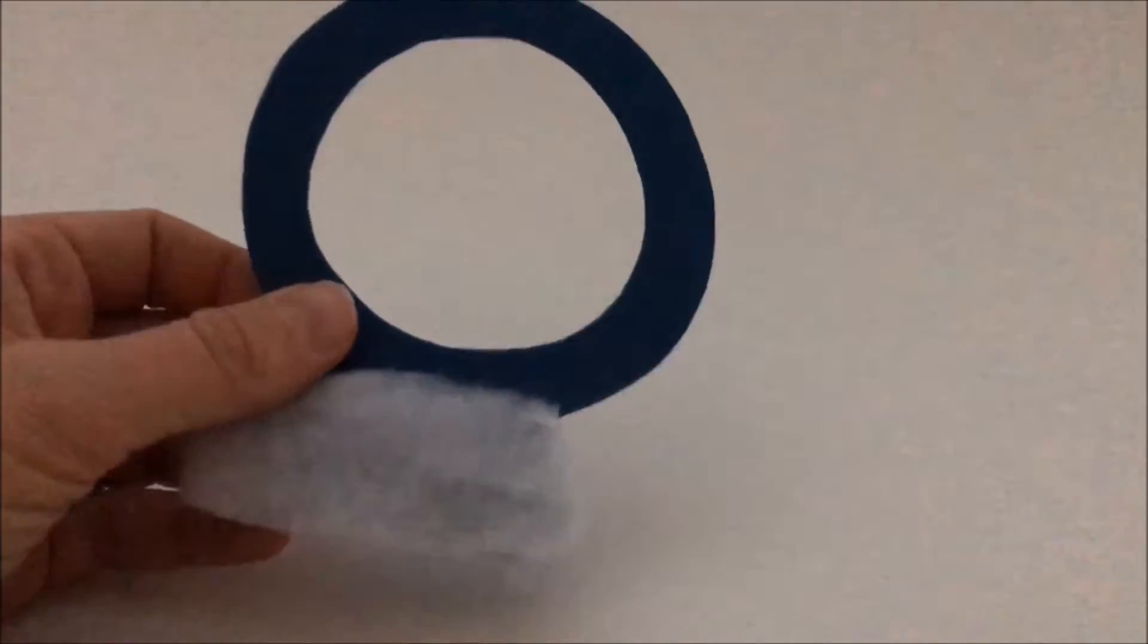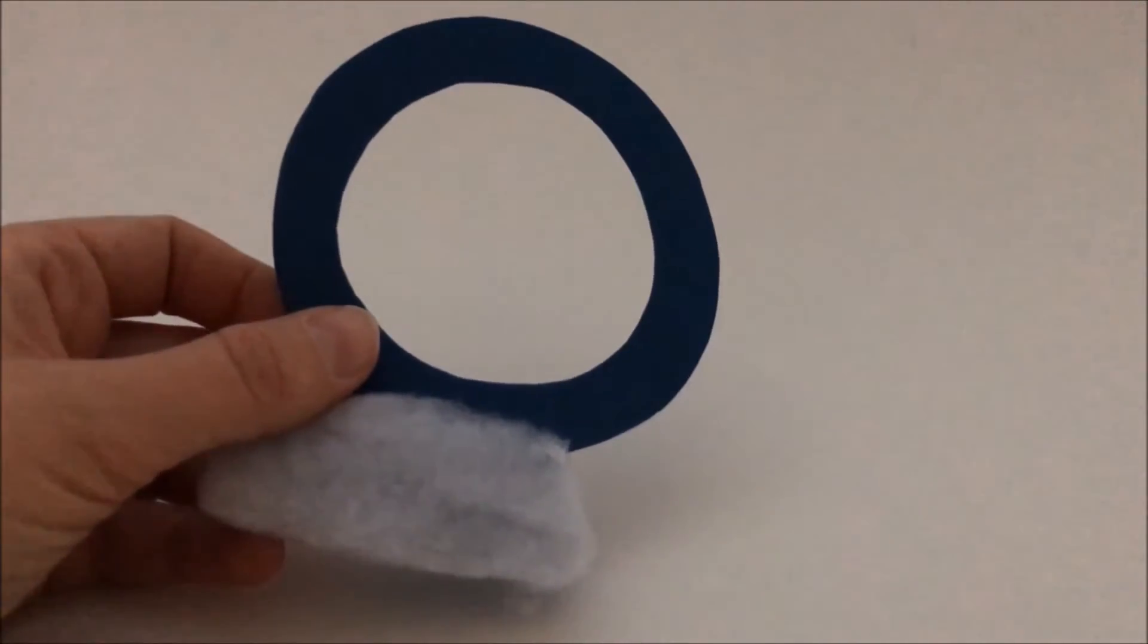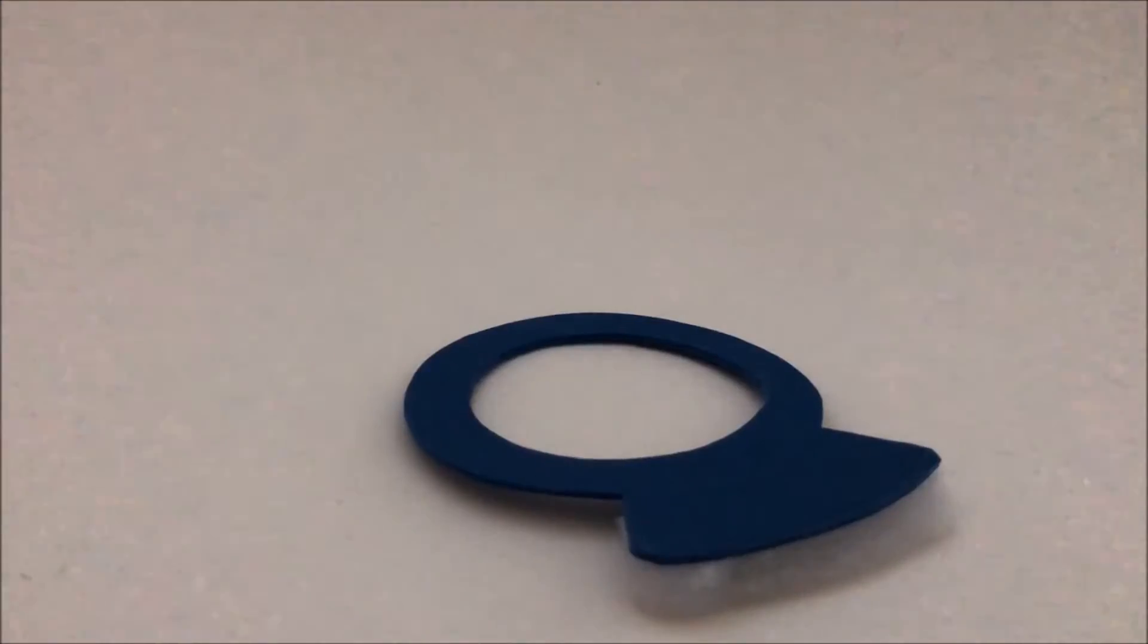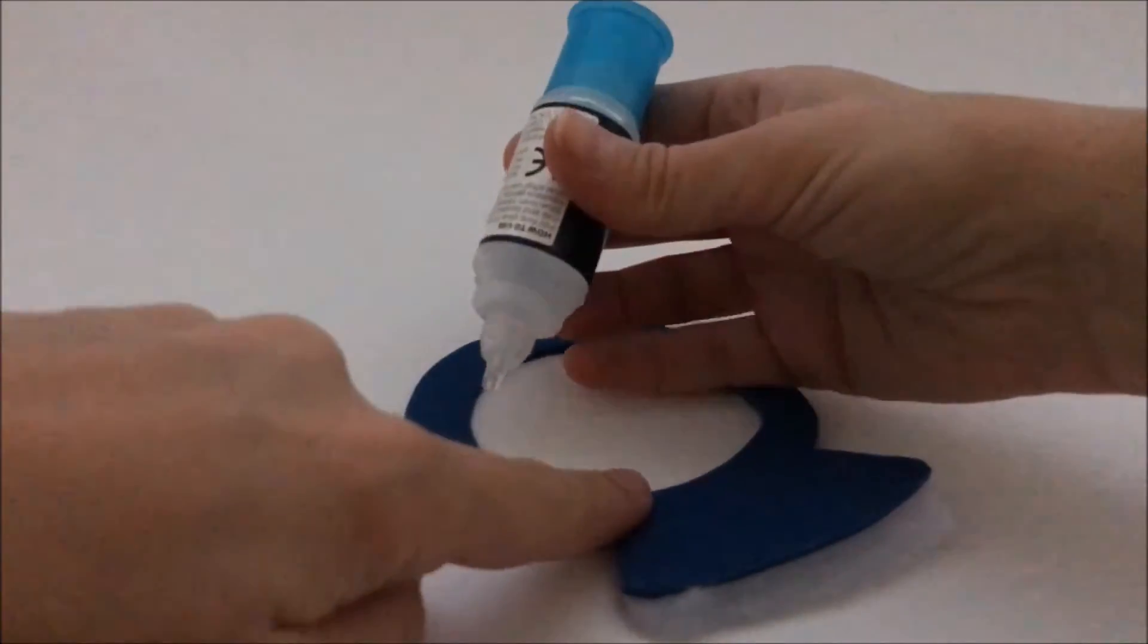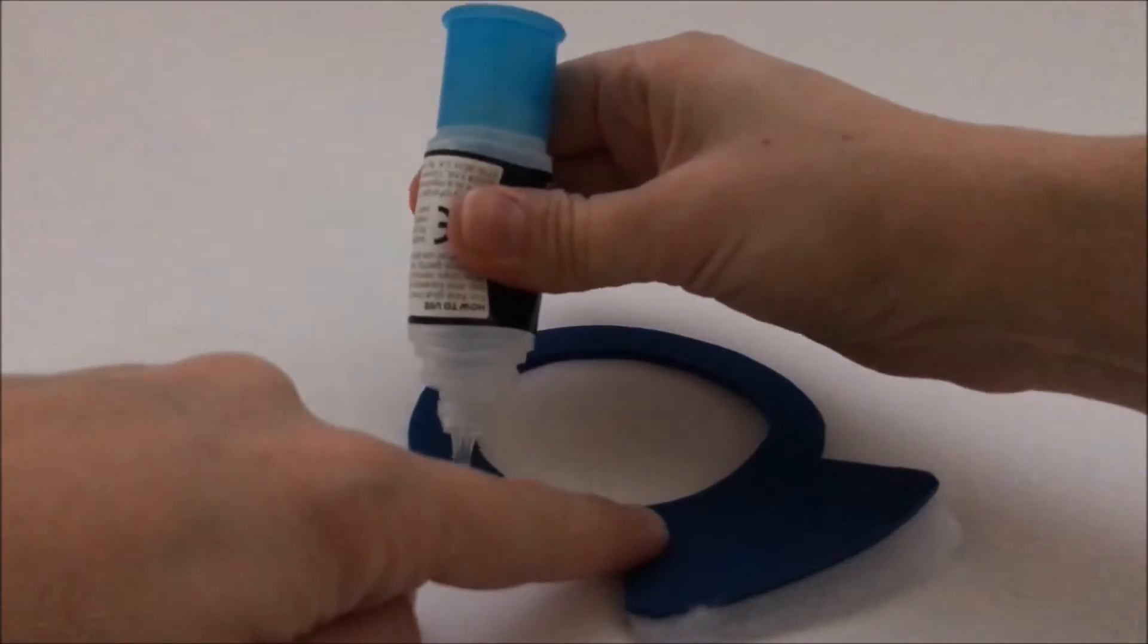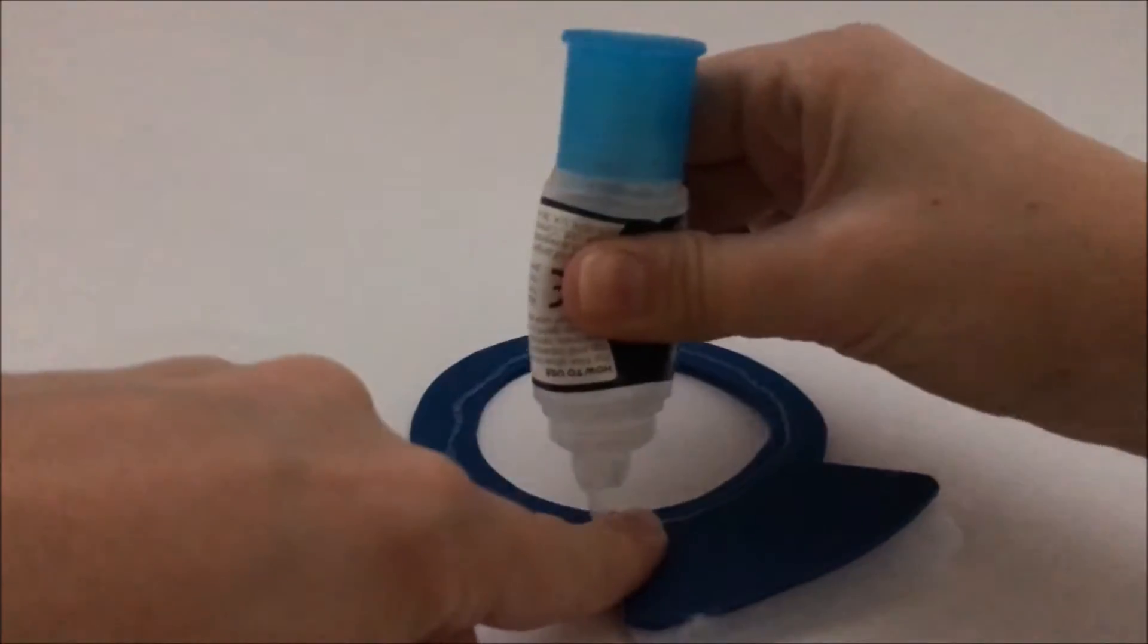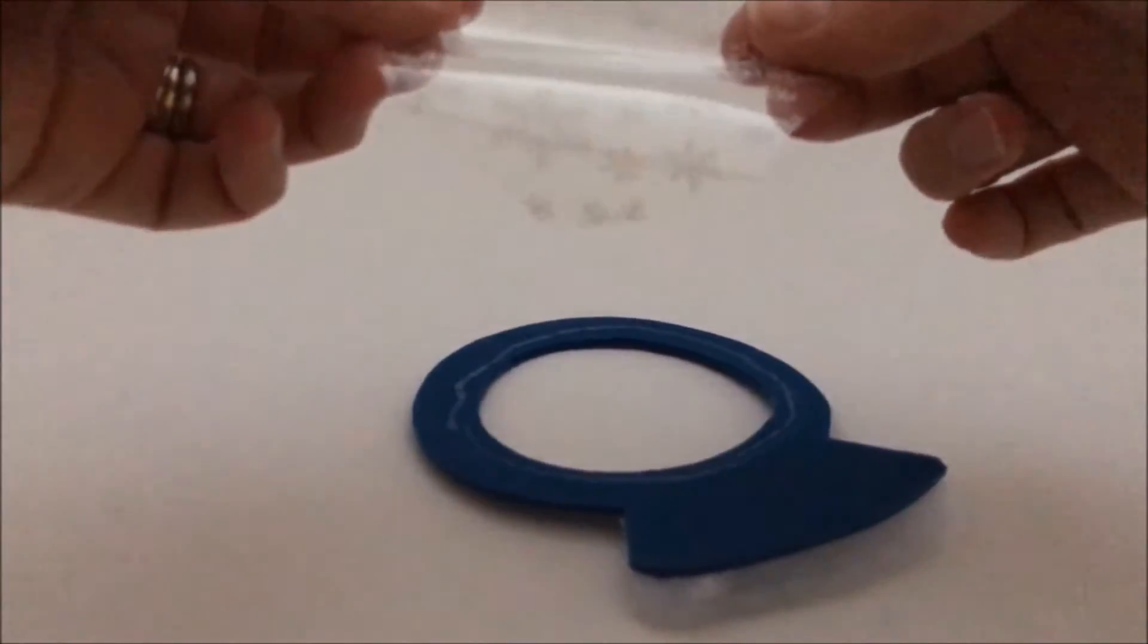Cut out a snow globe shape from the craft foam and then glue some wadding to the bottom to make snow. Take this lovely snowflake cellophane, glue around the inside of the snow globe, and stick it down.